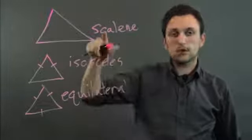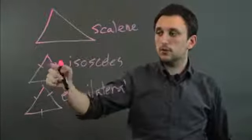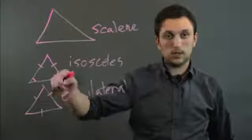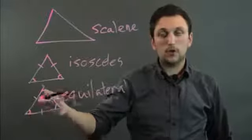So with a scalene triangle, no angles and no sides are equal. With an isosceles, two sides and the corresponding two angles are equal. And with an equilateral, all the angles and all the sides are equal.